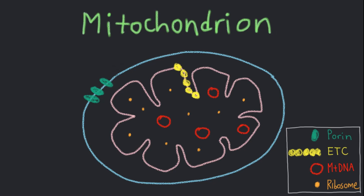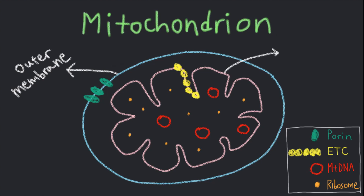There are four major regions in a mitochondrion: the outer membrane, inner membrane,